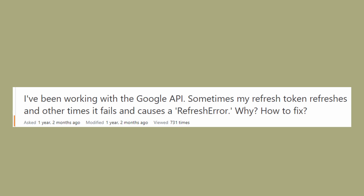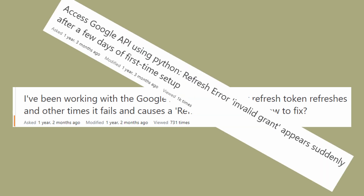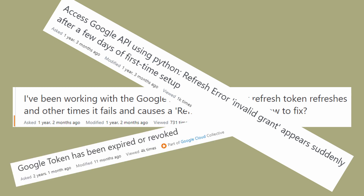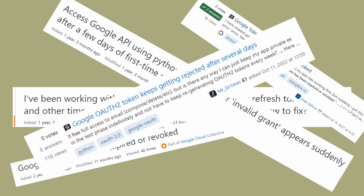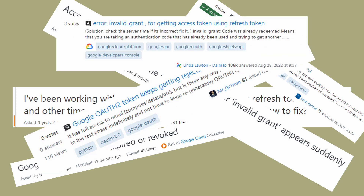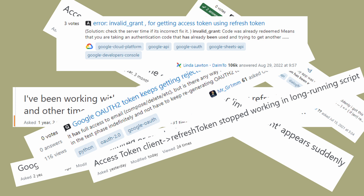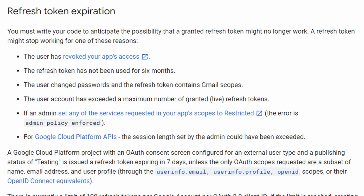Hi everyone, it's Linda again. Welcome back to my channel. I keep seeing questions on Stack Overflow about Google OAuth — either the invalid grant error or an issue with the refresh token expiring. As you probably know, the whole point of a refresh token is that it's not supposed to expire. However, truth be told, they can expire. The invalid grant error can mean a lot of things.